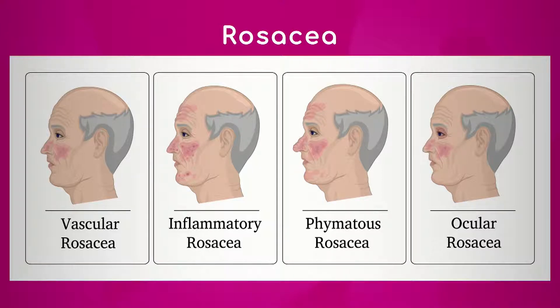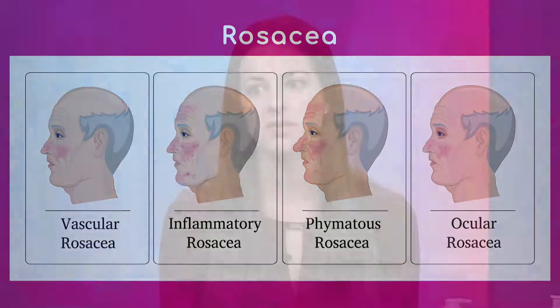And then lastly you have ocular rosacea, which is when you start to get involvement of the eyes, where patients get what looks like conjunctivitis — redness of the inside of the eye, of the eyelid margin. They can get styes, they can get a lot of dryness in that area, and that's usually coincided with a more severe form of rosacea.